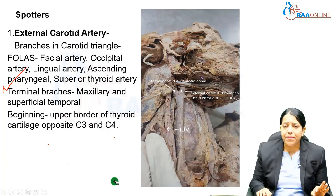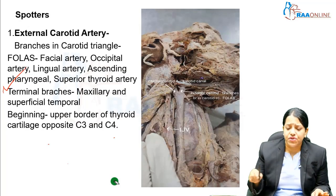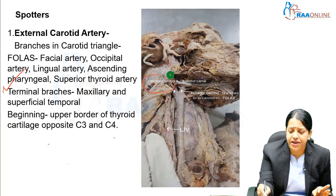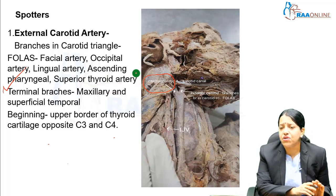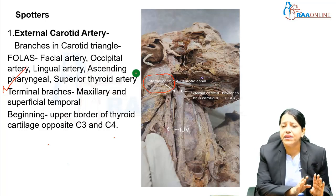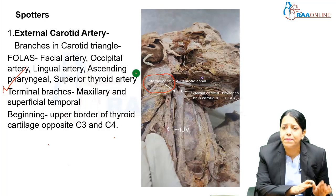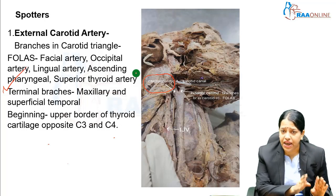Now coming to the next spotter — the internal carotid artery. It is spot identified here. Importantly, the internal carotid artery does not give any branches in the neck. It can be identified by seeing that it is placed more posteriorly and gives no branches in the neck.